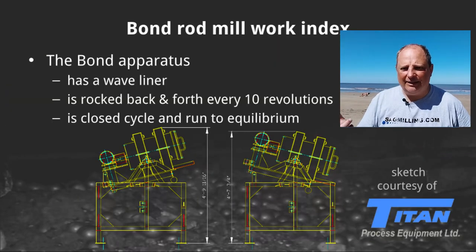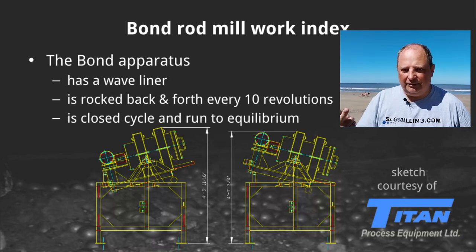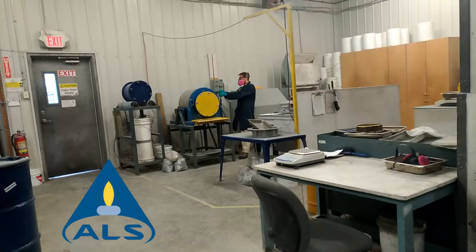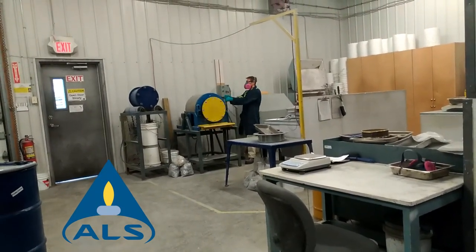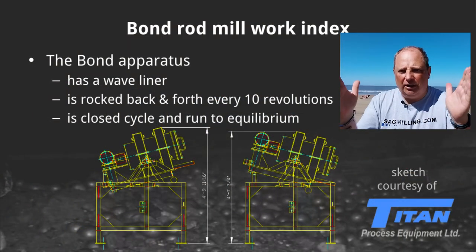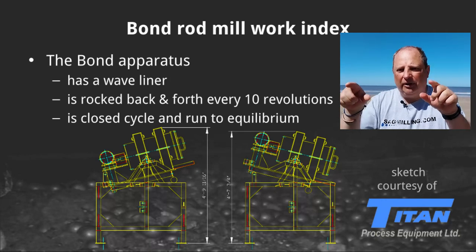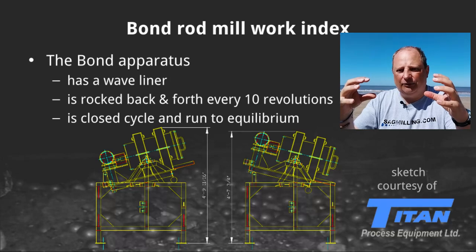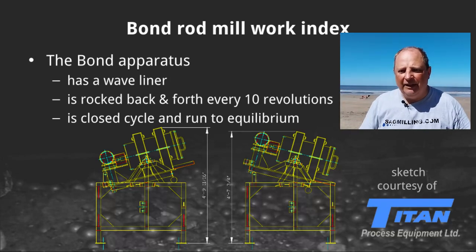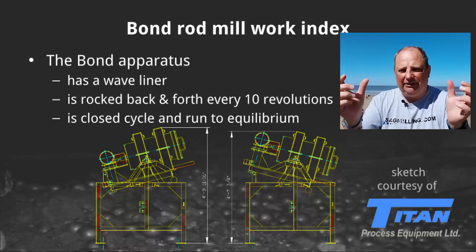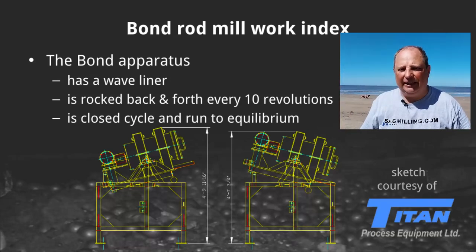The Bond apparatus has a wave liner as we saw in the picture. The mill has to be rocked back and forth as the test progresses because the rods will not fit snugly inside the mill interior — there's empty space between the end of the rod and the end of the mill where coarse particles can build up. That rocking mechanism brings those coarse particles back inside the rod charge to make sure everything gets ground evenly. If you don't rock the rod mill, you end up with coarse material that never gets ground and that will throw off your work index result.